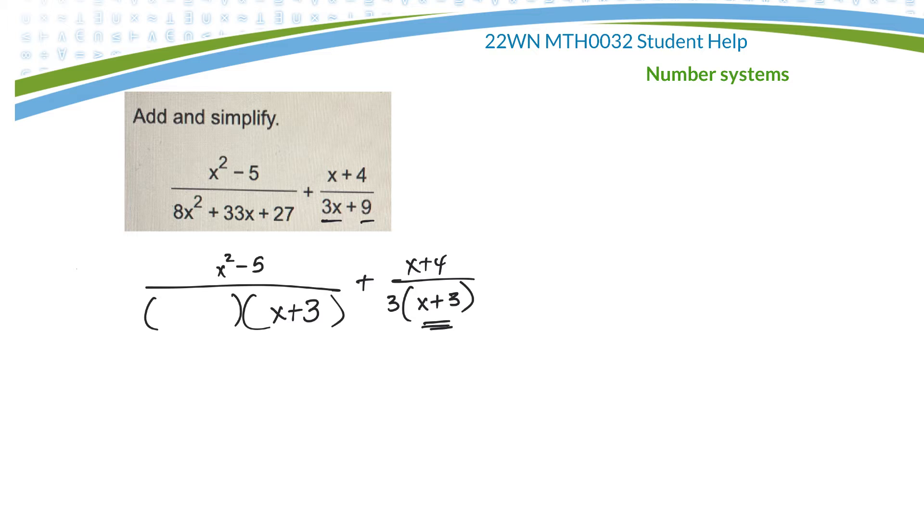So if this is an x, and I have to get an 8x squared out of the deal, this one here over here has to be an 8x. And then, I need to get a 27. So if this is a 3, something times 3 will give me 27. This one, I'm hoping, is 9.